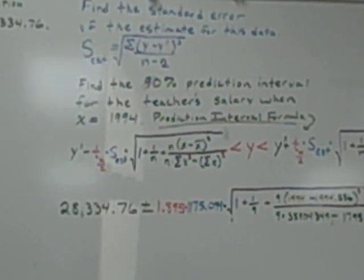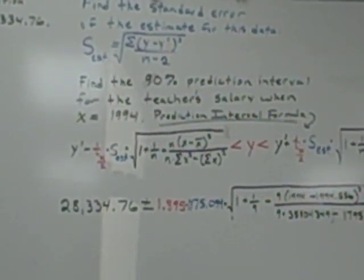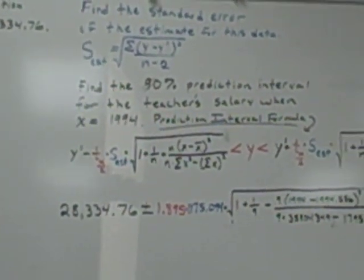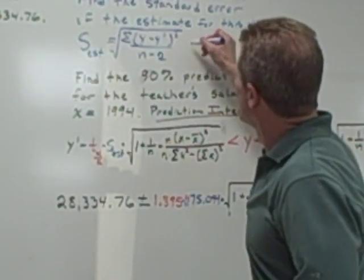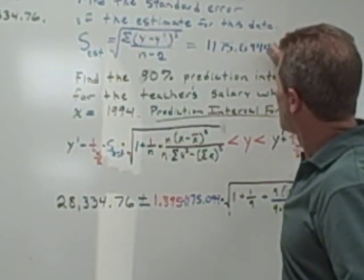So now I want to divide that by n minus 2. Well, there are nine data points entered, so n would be 9, n minus 2 would be 7. So I'm going to divide by 7. And then the formula tells me to take the square root. So 1,175.094489 is my standard error of the estimate. Let's go ahead and write that down.